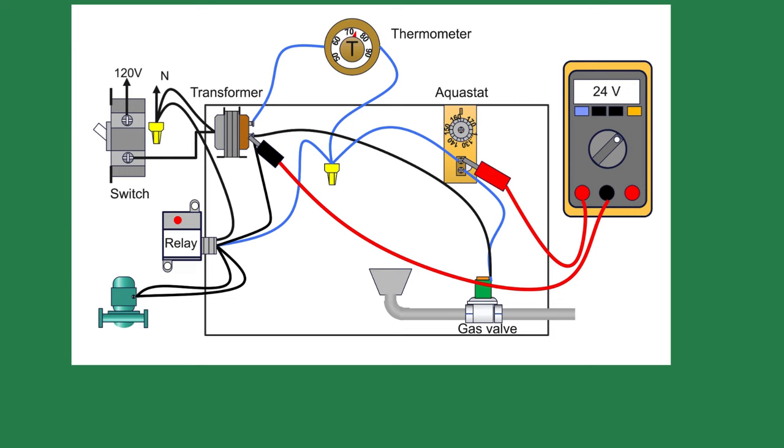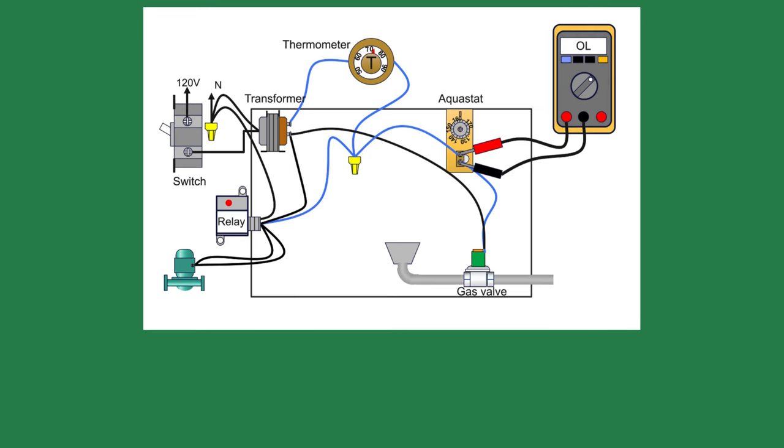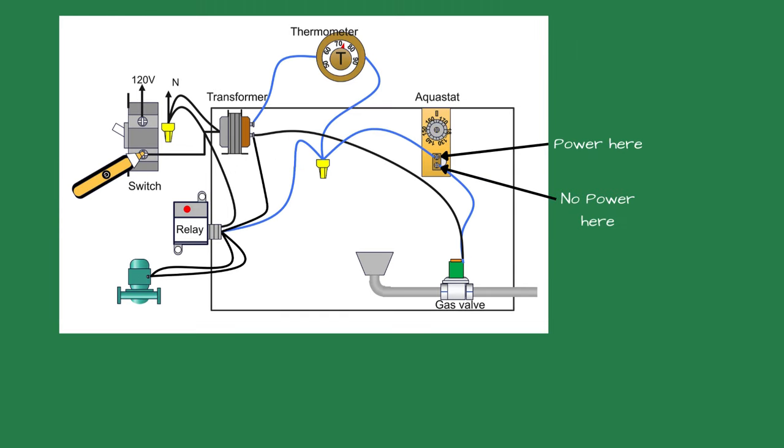The boiler circulator starts when the thermostat calls for heat. If we have power to both screws on the aquastat, we know the water temperature of the boiler is below the set point of the aquastat. Some techs will check the continuity across the two screws, but I have found this can give you a false reading of being made due to the wiring interference. If I have power on one side and none on the other, the water temperature is above the aquastat setting or the aquastat is defective.